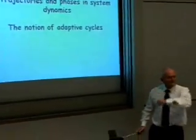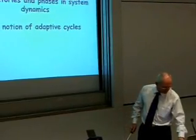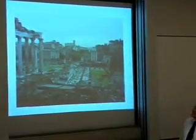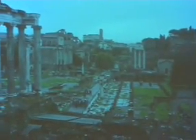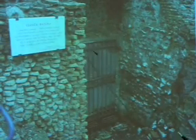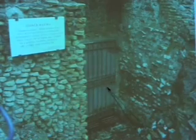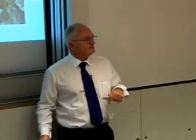The second two tenets have to do with changes in system dynamics and the notion of adaptive cycles. This is the Roman Forum on a wet Sunday when I was there — a fantastic place to see what a civilisation can achieve. This was the centre of Rome. If you look around in there, you can find the Cloaca Maxima, which is an amazing deep drainage system built over 2,000 years ago that still works.